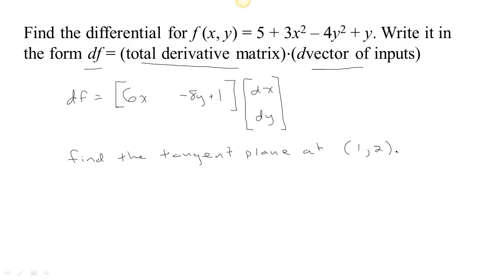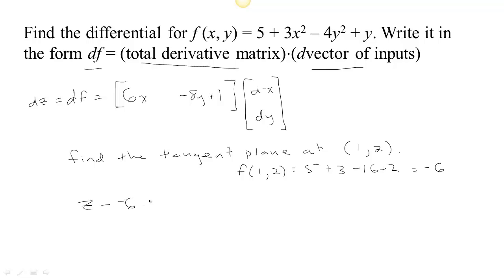Let's find it at the point x equals 1 and y equals 2. In that case, f is 5 plus 3, and 2 squared is 4, so 4y squared will be minus 16 plus 2. That's 8 minus 16, which is negative 8 plus 2, giving negative 6. So the change in f — let's call the output variable z instead — means z minus negative 6, because at (1, 2) our function is at negative 6, so if we change the inputs we move away from negative 6.